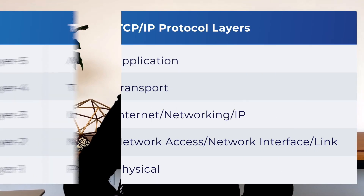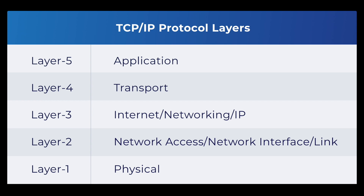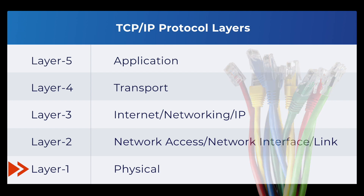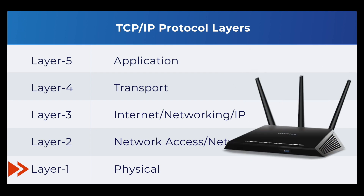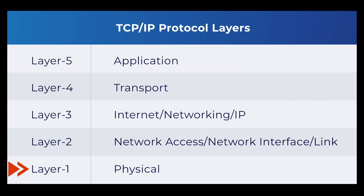Starting from the bottom up, let's examine TCP/IP and its five layers. On the bottom is the physical layer, which includes hardware and devices. Think of it as internet cables or wi-fi routers. This layer is concerned with how two nodes connect to each other.